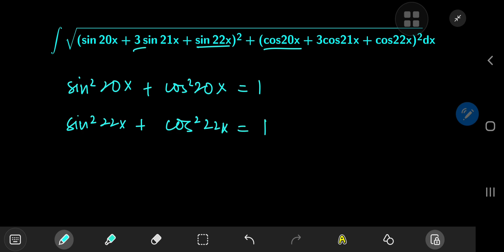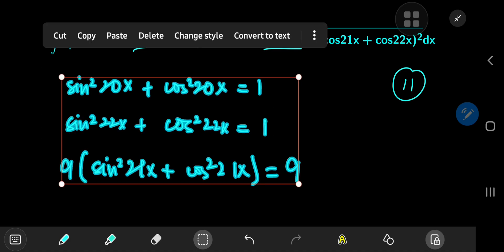And notice the 3 here. So on expanding the square, we're going to get 9 times the square of the sine of 21x, as well as the corresponding cosine term, which gives us 9 times 1, which is 9. So add up all the stuff and you get an 11 that I'm just going to write here on the side so I don't forget this later.